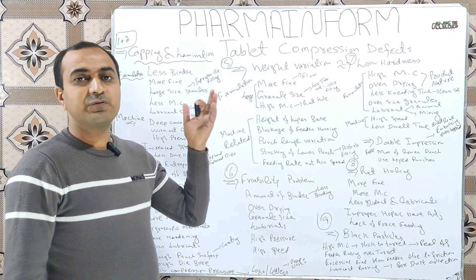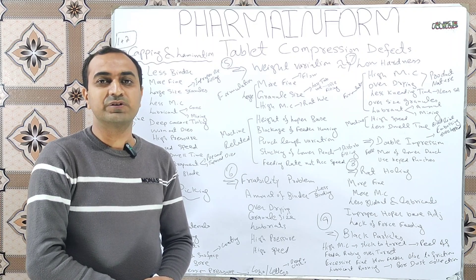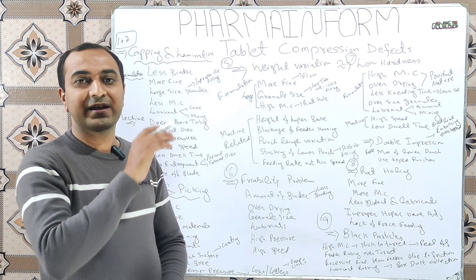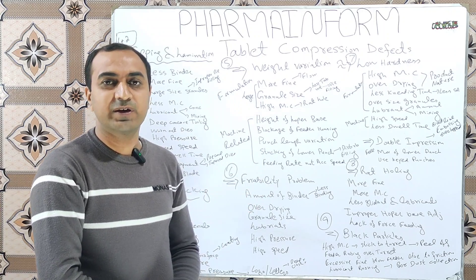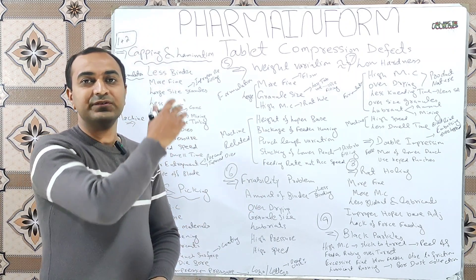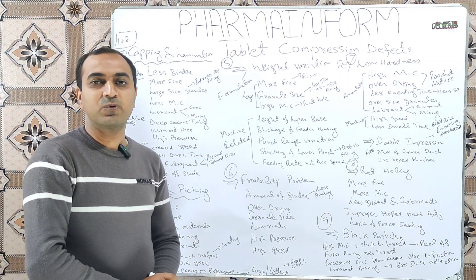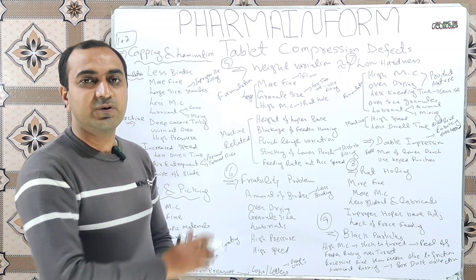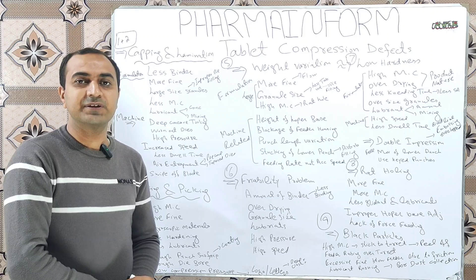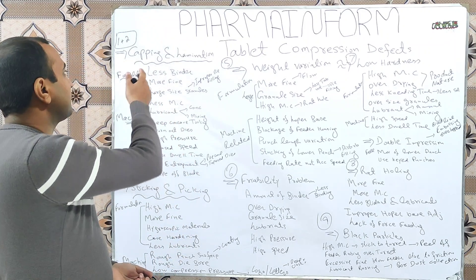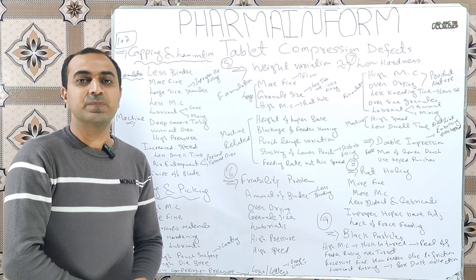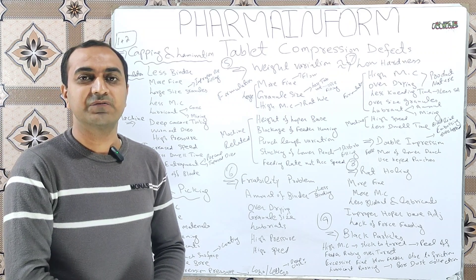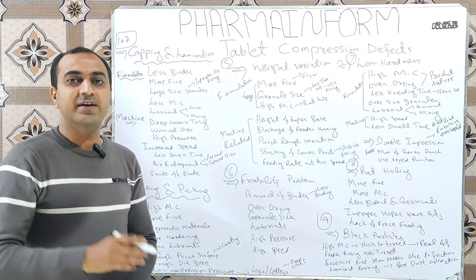In this video we will discuss all issues related to both formulation and the machine. We will discuss the formulation-related causes of each defect and also the machine-related causes, along with their solutions. Let's start with capping and lamination. Tablet capping is the most commonly observed compression defect.